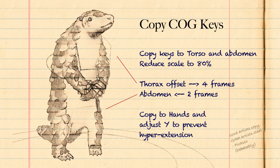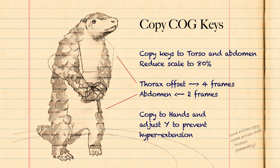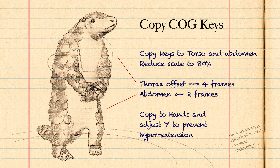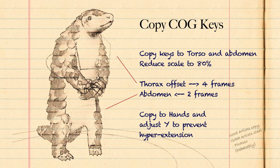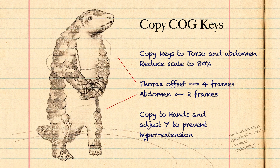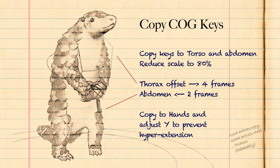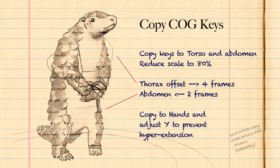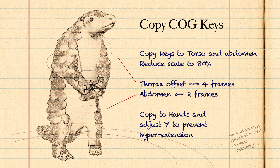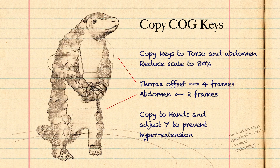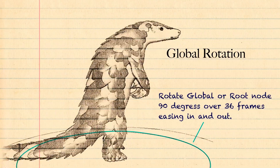We copy all of those values to both the abdomen and the torso and offset them accordingly so that we end up with a bit of follow-through. I'll also copy these values to the hands, give it a little bit of sway, and prevent any hyper-extensions there.